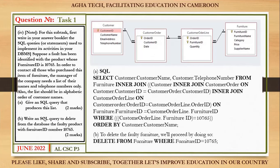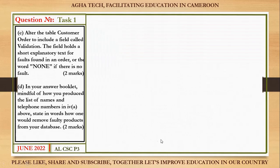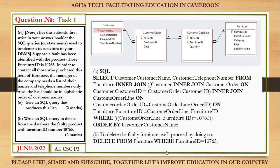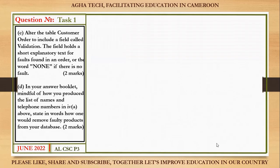Part b: write an SQL query to delete from the database the faulty product with FurnitureID 10765. Simply write: DELETE FROM Furniture WHERE FurnitureID = 10765;